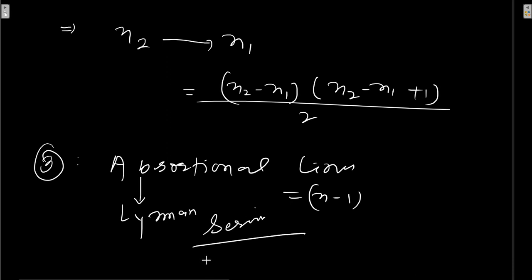After that, we have the limitations of Bohr's theory. The main limitation is that Bohr's theory is only valid for one-electron systems.